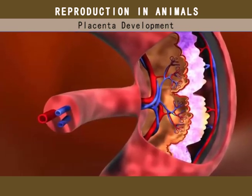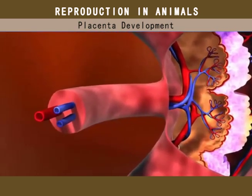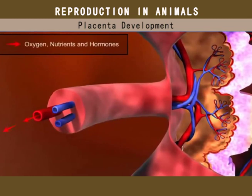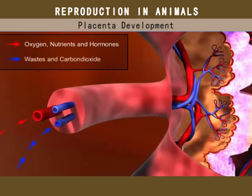The placenta is an important structure that supplies the embryo with oxygen, nutrients, and hormones from the mother. It also carries waste products such as carbon dioxide and nitrogenous waste from the fetus to the mother. Blood cells, plasma proteins, and most bacteria do not cross through the placenta.